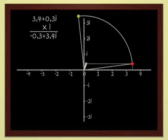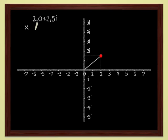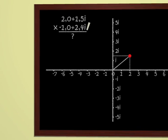And finally, we can multiply any two complex numbers with no problem whatsoever. For instance, let's try to multiply 2 plus 1.5i and 1 plus 2.4i.